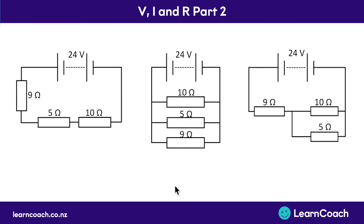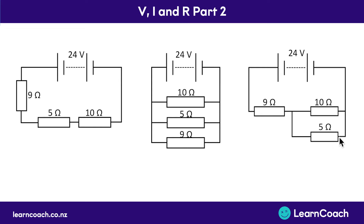I'm going to relate every example to three different circuits. The first is a series circuit, where there's only one pathway. The second is a parallel circuit, where there's three different pathways. The third is a combination: a 9 ohm resistor in series, with a 10 ohm and a 5 ohm resistor in parallel with each other.